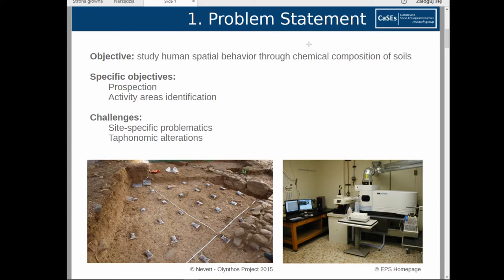The baseline assumption here is that specific activity areas left characteristic chemical imprints in soils. However, the truth is that we have a limited understanding of the links between the chemical composition of soils and the archaeological problems, resulting in few peer-reviewed publications and projects. This is in part because of the great challenges we are facing, such as the difficulties in determining the site-specific geogenic baseline and also in identifying the specific pedochemical alterations affecting soil formation.